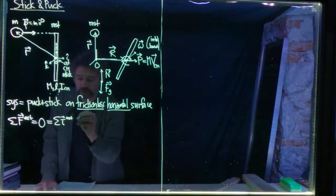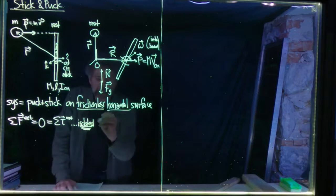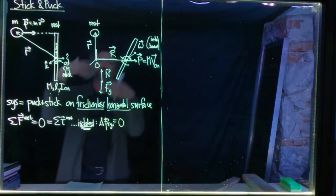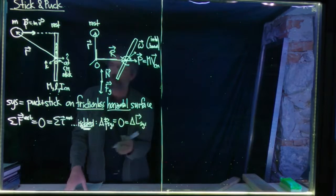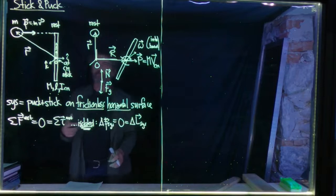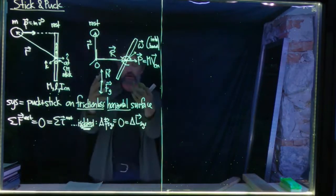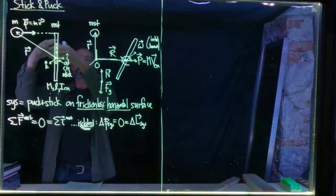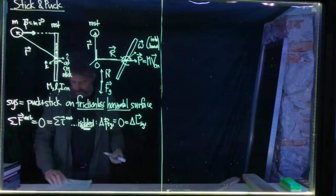Because both the sum of external forces and the sum of external torques are zero, this is equivalent to saying the system is isolated from external influences. If it's isolated, the linear momentum of the system can't change — whatever linear momentum you had initially must equal the linear momentum after the collision. Similarly, the angular momentum of the system cannot change. We'll look at conservation of linear momentum, then angular momentum, then conservation of energy.